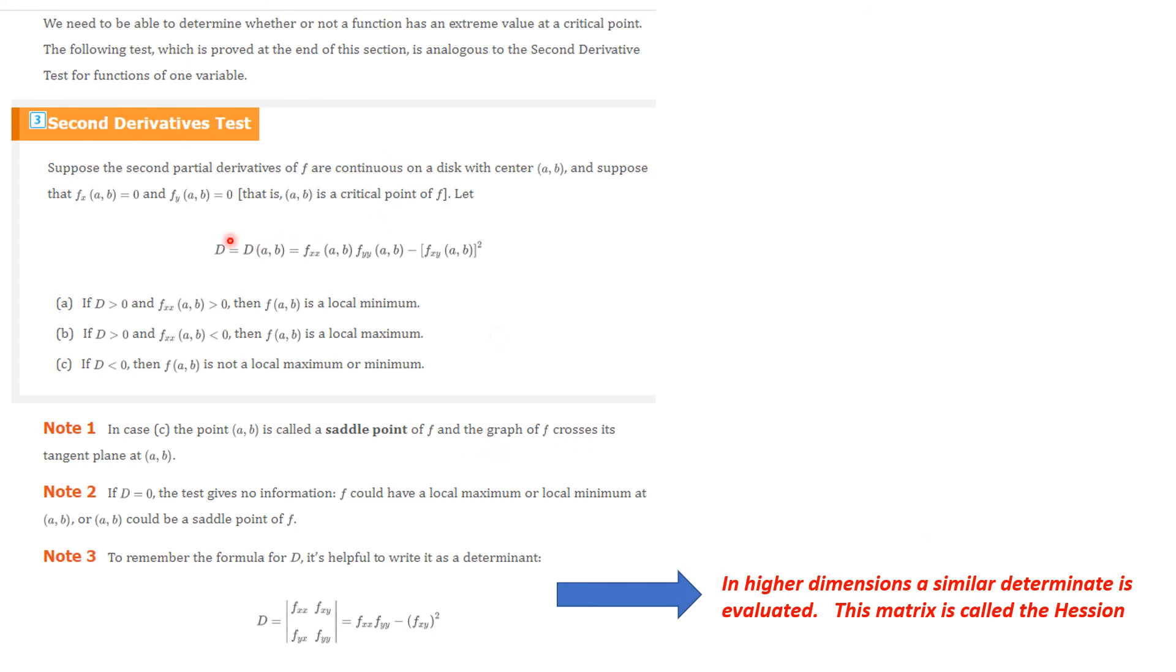So, this is the second derivative test. So, the first thing is you do, you find the critical numbers, but then this is called the second derivative test. So, suppose the second partials are continuous on a disk with center AB and suppose that the first partials both are 0. That means AB is a critical point of F. Then we define an expression D equaling, this is the second partial of F with respect to X times the second partial with respect to Y of F minus this is FXY, the cross partial evaluated AB. Now, this is a very complicated expression, but this is the one you have to deal with. So, D is the second derivative component.